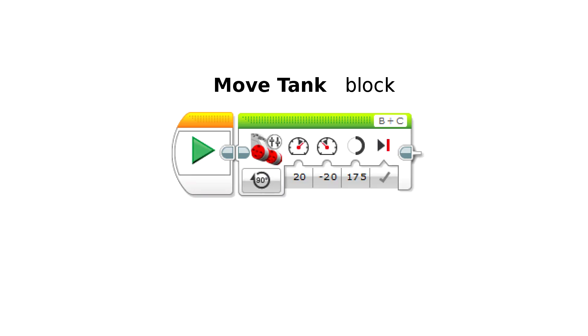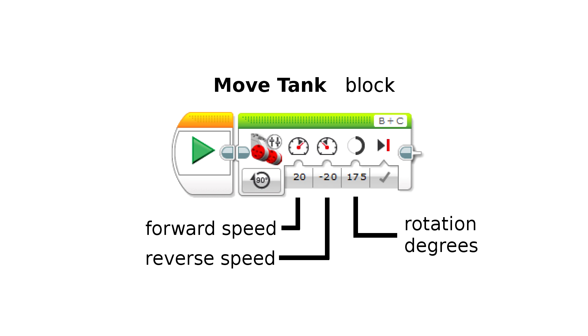Here is a simple program to control the robot, using the move tank block. In this program we set motor B to a forward speed of 20, motor C to a reverse speed using negative 20, and we set the rotation angle to be 175 degrees.